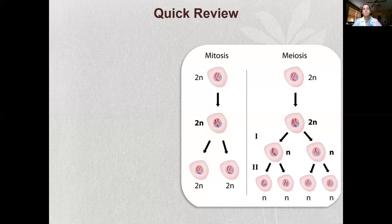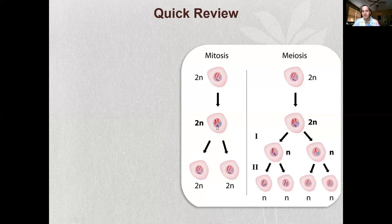Let's do a quick review. Mitosis is where we go from a diploid cell — a single diploid cell — and it duplicates its chromosomes, then divides into two more cells which are still diploid. So there are two copies of each allele, and it creates copies of each of those and distributes one copy to each of the two daughter cells, giving you two diploid cells at the end of mitosis.